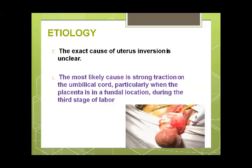The exact cause of inversion is unknown, but mismanagement of the third stage of labour is a significant factor. Other risk factors include: an atonic uterus; grand multiparity; placenta adherent in the fundus. Strong traction on the umbilical cord — particularly when the placenta is in a fundal location during the third stage — can cause inversion. Because of that strong pull with an adherent placenta, the uterus becomes inside out.